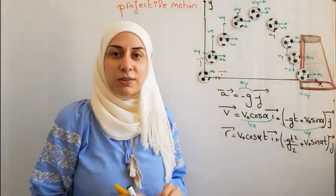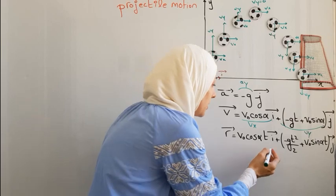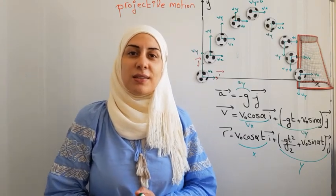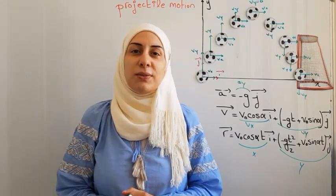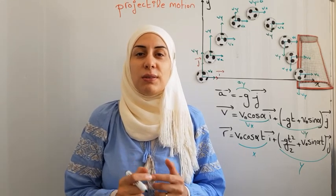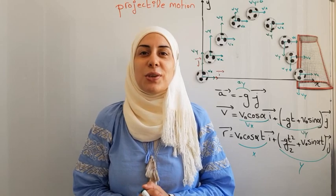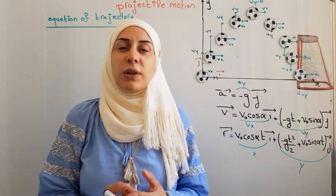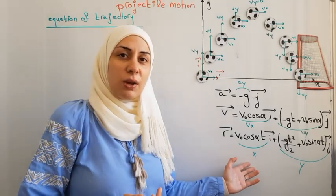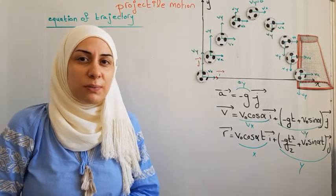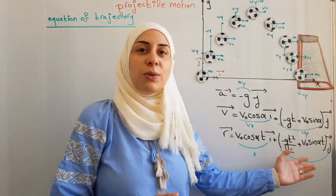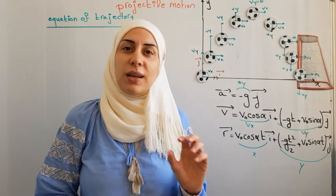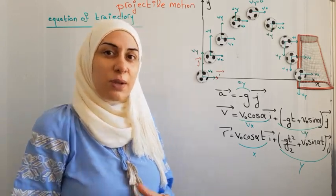Now let's look at the position vector r, which also has two components: x and y. In a classical projectile exercise you will usually be asked about the equation of trajectory, the maximum height, and the range — we will derive these equations in this video. The equation of trajectory is a relation between the x and y coordinates of the projectile, and it is time independent.